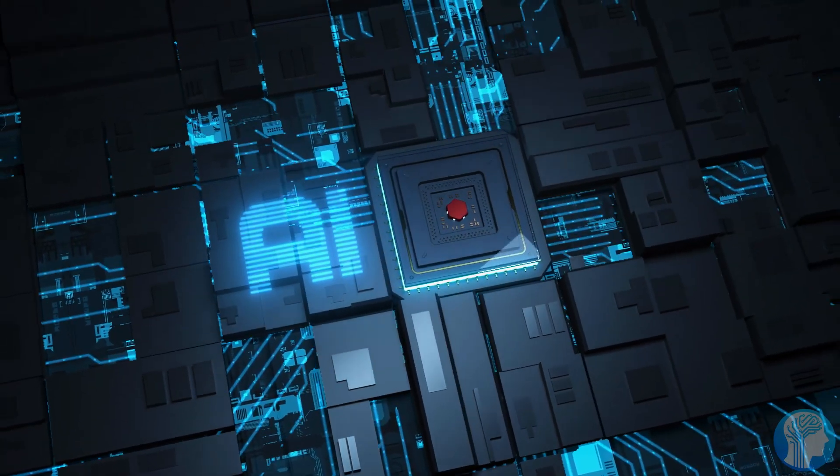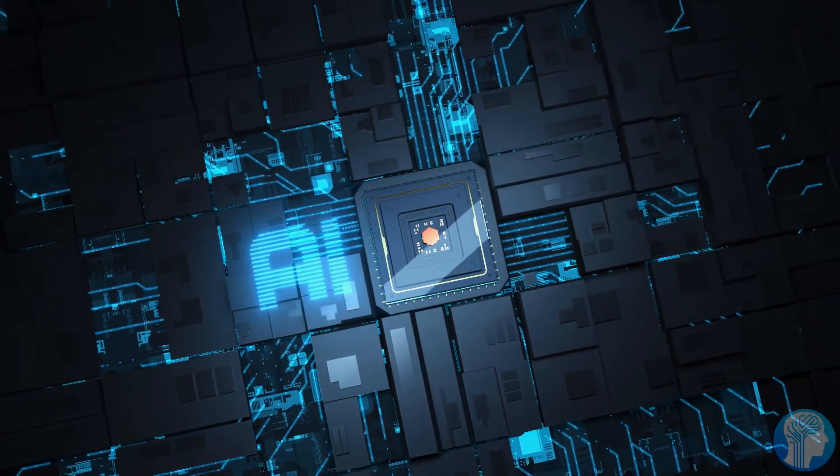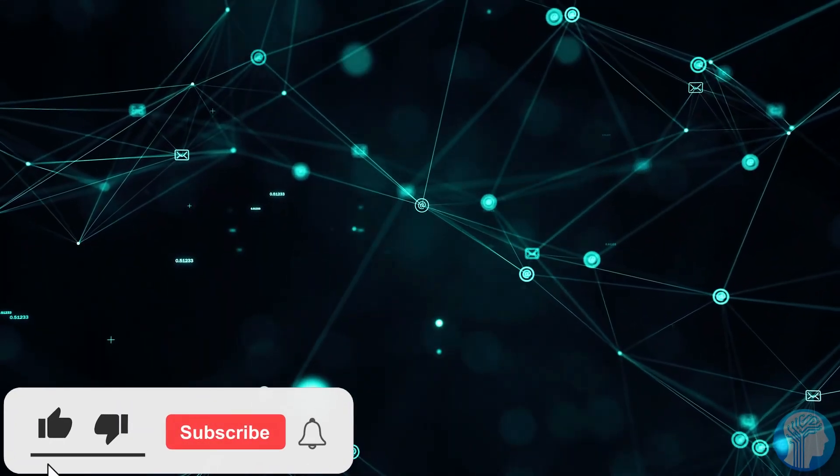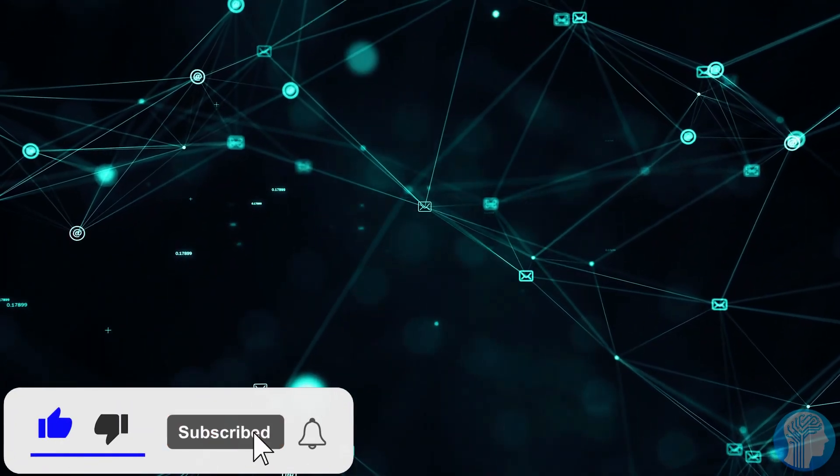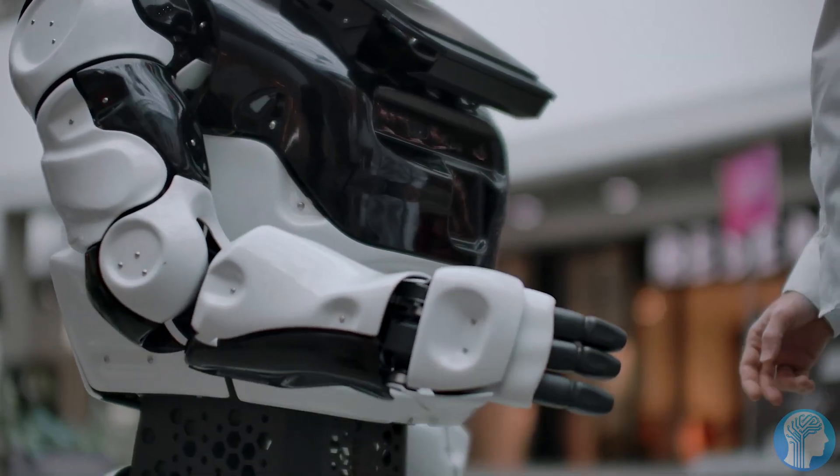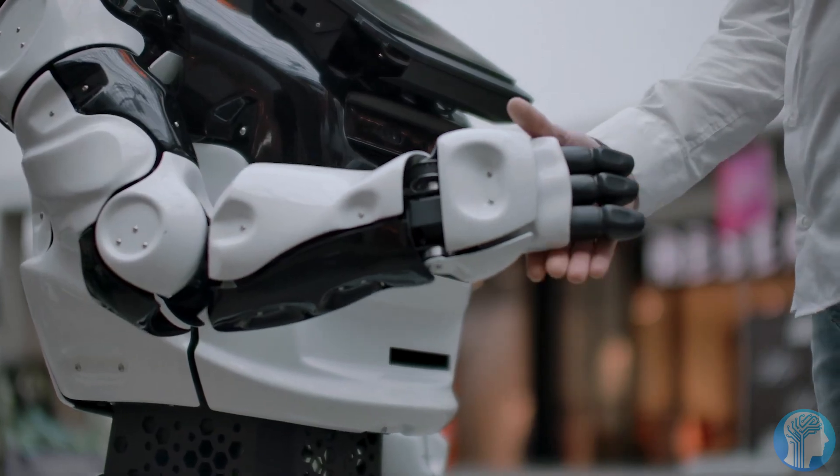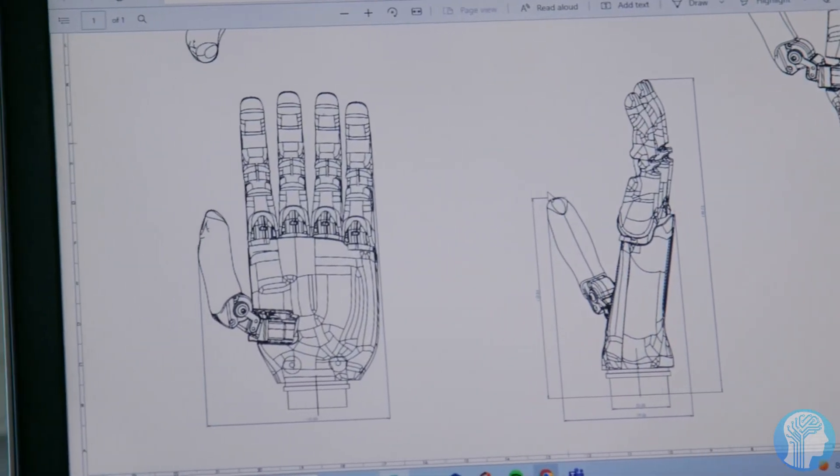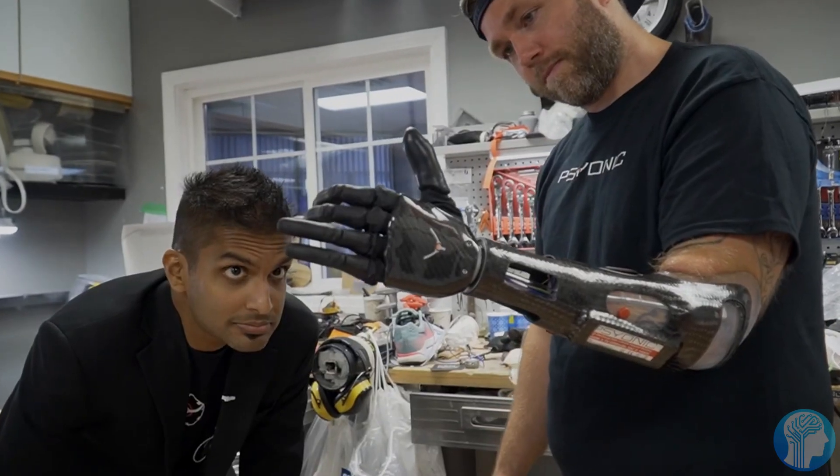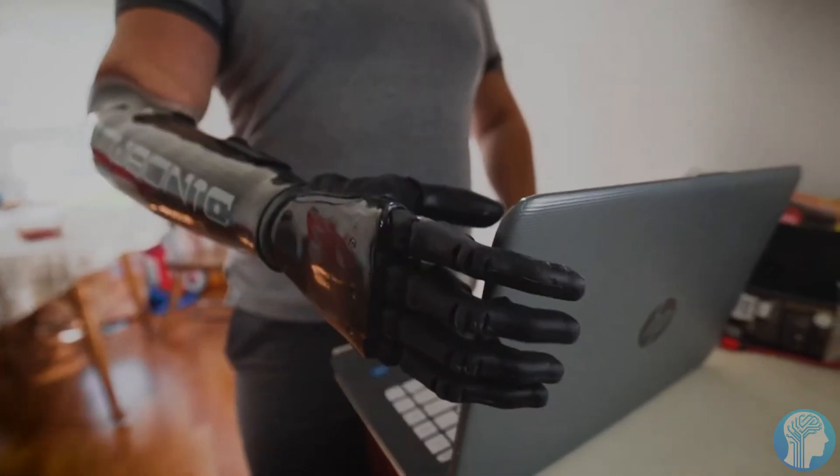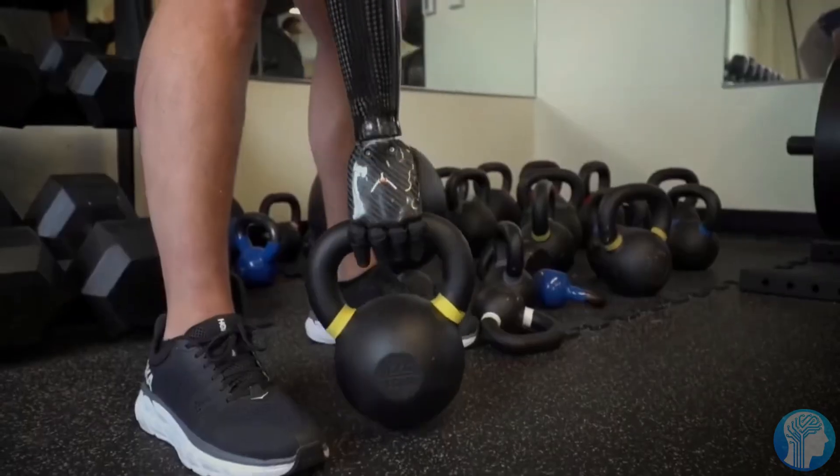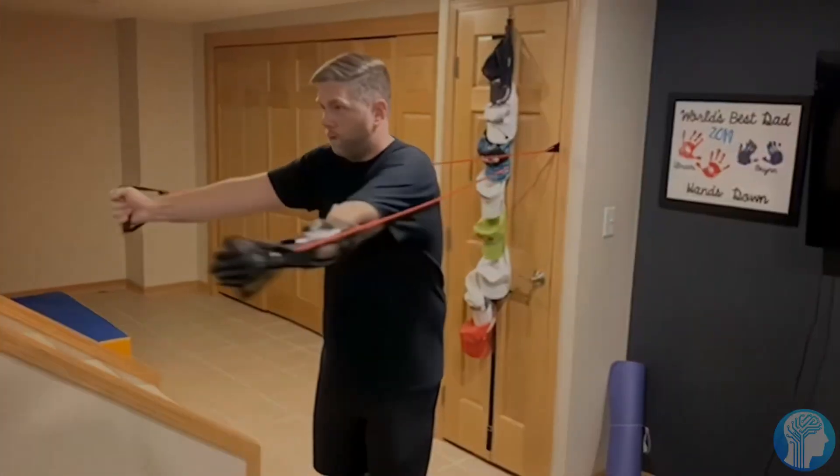Enter the realm of brain-computer interfaces, BCIs, and here's where it gets truly mind-blowing. Companies like Elon Musk's Neuralink are already pioneering BCIs that establish a direct communication link between the brain and external devices. Now envision the synergy between 3D-printed prosthetics and advanced BCIs. The marriage of these technologies could empower amputees to control their artificial limbs with mere thoughts.